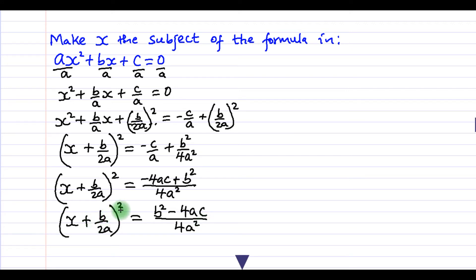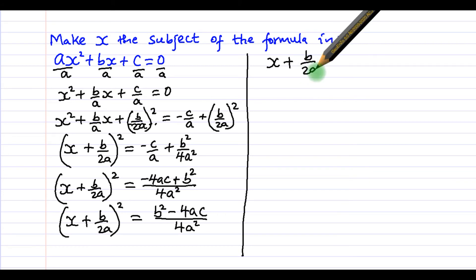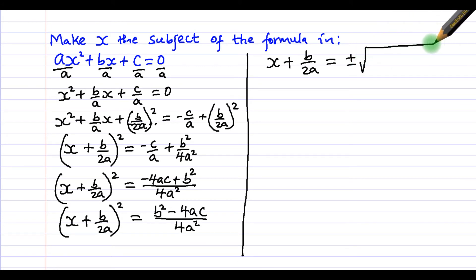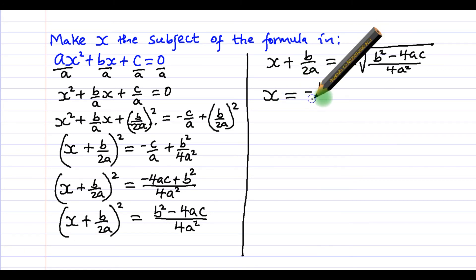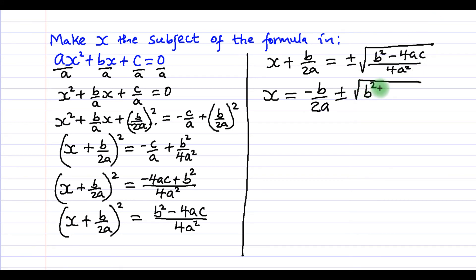We take the square root on both sides, so x plus b over 2a equals plus or minus the square root of b squared minus 4ac, all over 4a squared. The square root of 4a squared is 2a. We then take b over 2a to the right hand side, giving x equals minus b over 2a plus or minus the square root of b squared minus 4ac, all over 2a.